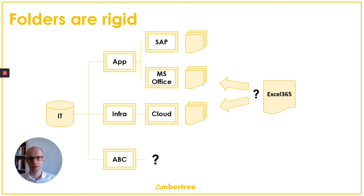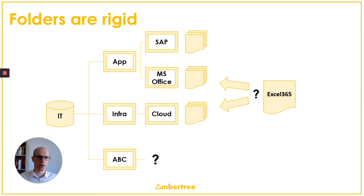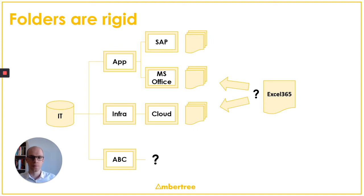Moreover, this is fundamentally a structure of boxes, with the constraint that each document goes into only one box. But what if you have a document that is relevant for multiple domains? Do you just pick one and create some kind of linking and referrals, or do you have to go for duplicates and accept all the consequences that that has? The problem essentially is that this system only has two dimensions, and it places the structure above the documentation.